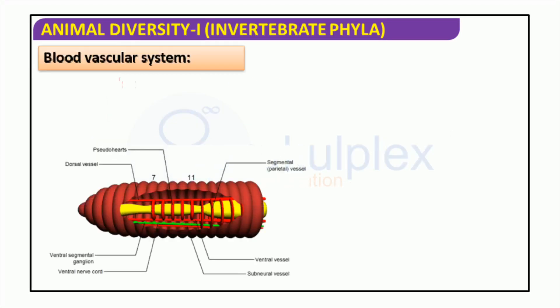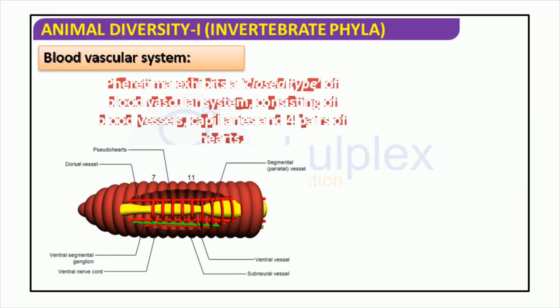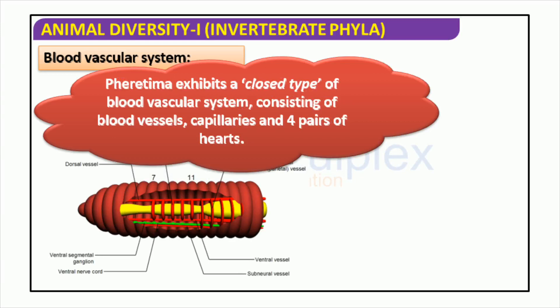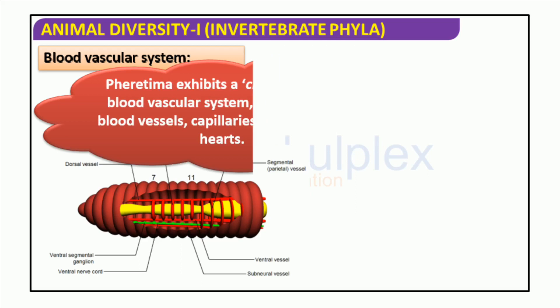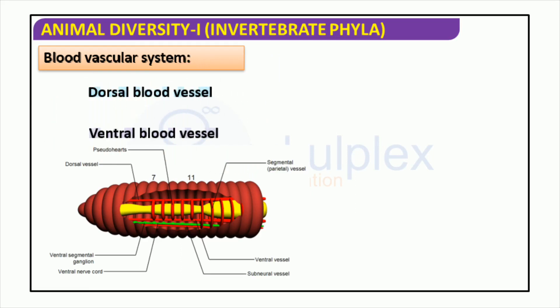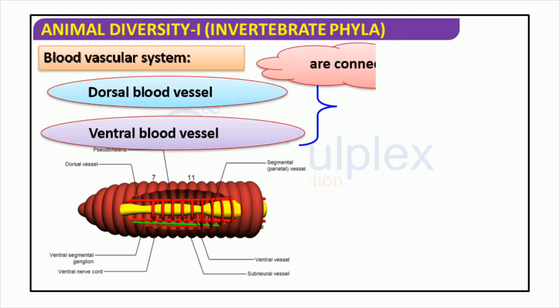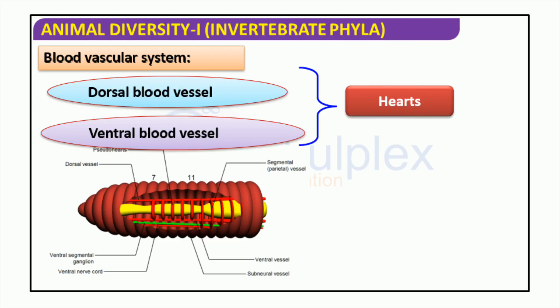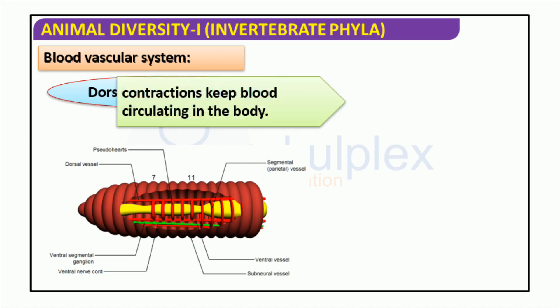The evolution of the animal kingdom has been profoundly influenced by the progress of the blood vascular system. The components of this system — blood vessels, capillaries, and hearts — facilitate the circulation of blood around the body. The heart pumps blood through the arteries and veins, supplying oxygen and nutrients to the body. Other essential components for survival are the gut, nerve cord, and body wall. Together, these systems provide the foundation for animal life.